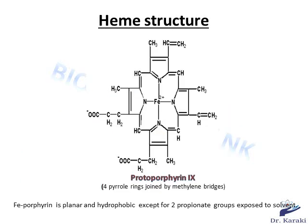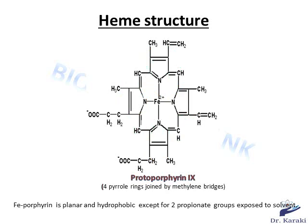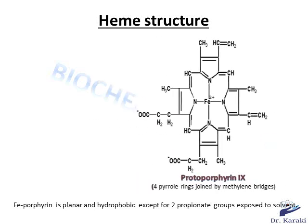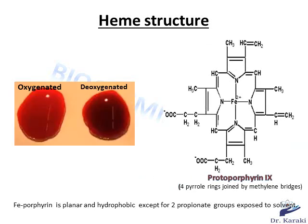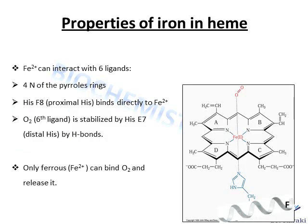A closer look at the heme group reveals that it consists of a central ferrous iron Fe2+ and a heterocyclic protoporphyrin complex made of four pyrrole rings joined by methylene bridges. The iron-porphyrin is planar and hydrophobic, except for two propionate groups exposed to solvent. Heme gives blood and muscles a red color when oxygenated and a purple-red color when deoxygenated.